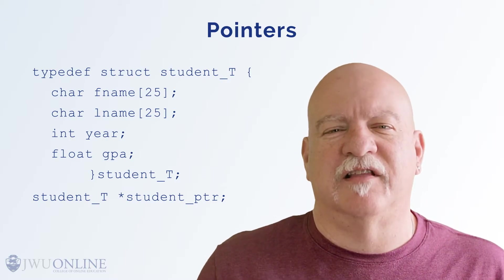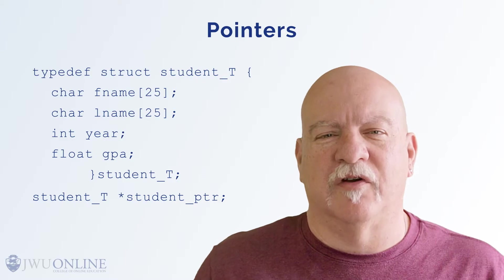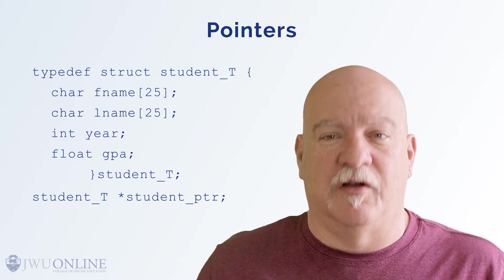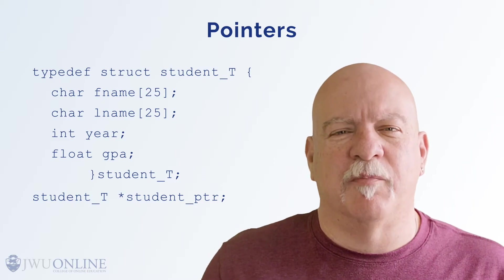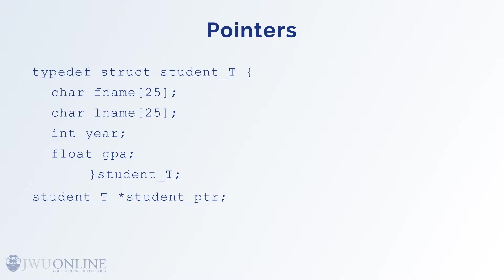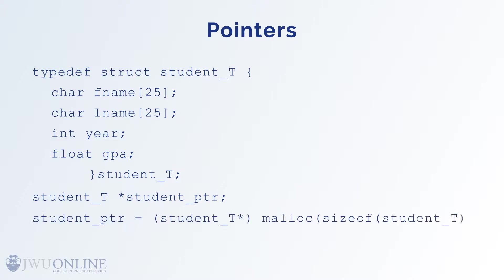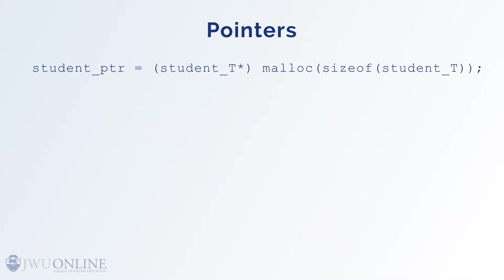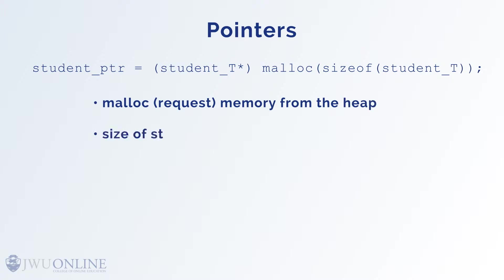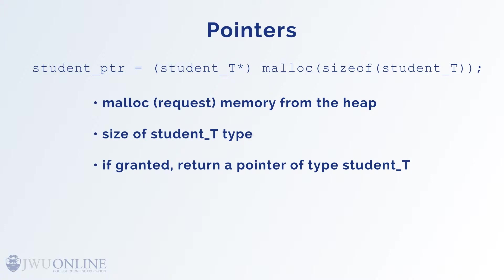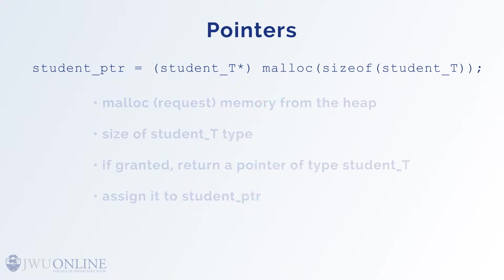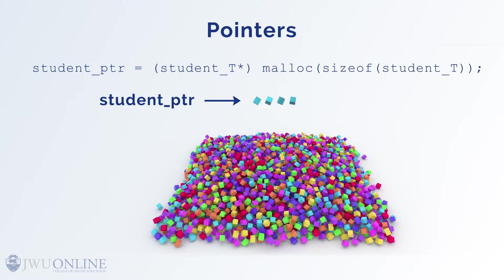The asterisk or star indicates that the variable name — in this case student_pointer — is a pointer type matching student_t. The malloc command returns the pointer via an assignment statement, so: student_pointer = (student_t*) malloc(sizeof(student_t)). In English: malloc, or request memory from the heap, the size of the student_t type, and if granted, return a pointer of type student_t and assign that pointer to student_pointer. Once this is done, student_pointer holds the address of the corresponding piece of memory.